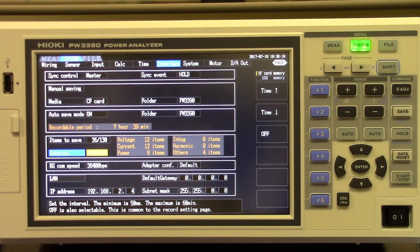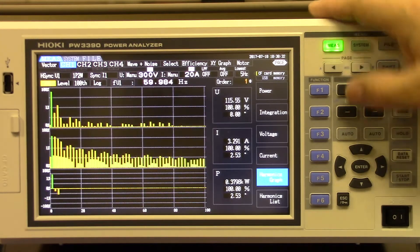The PW3390 allows the user to customize the data they want to log using a recording interval which can be as fast as 50 milliseconds. Recordable data that is available is voltage, current, effective power, apparent power, reactive power, power factor, phase angle, efficiency, integrated current and power, and harmonics up to the hundredth order.